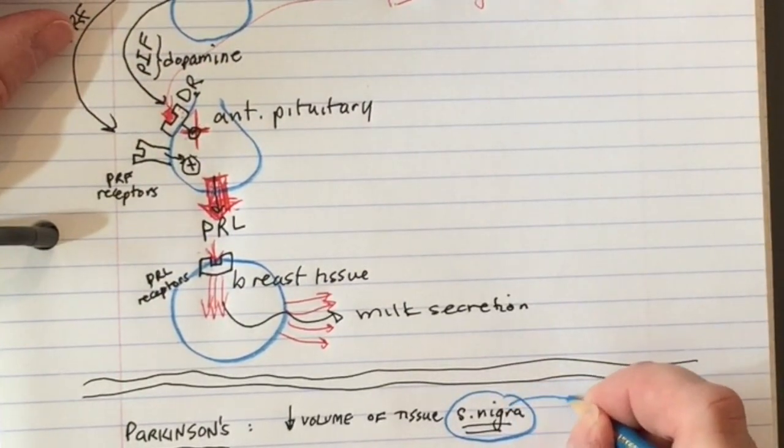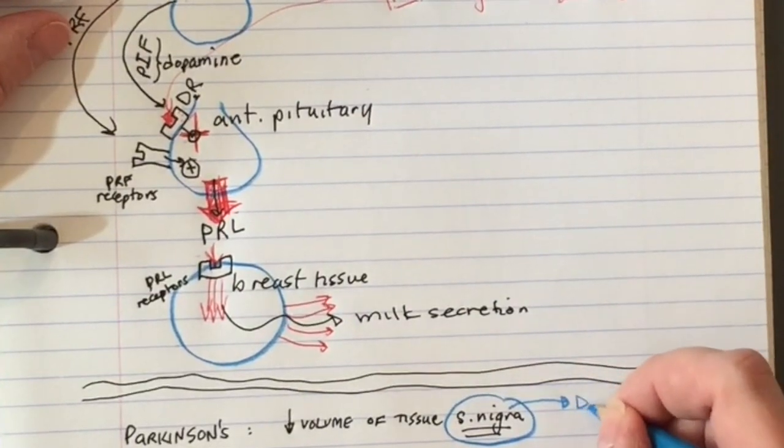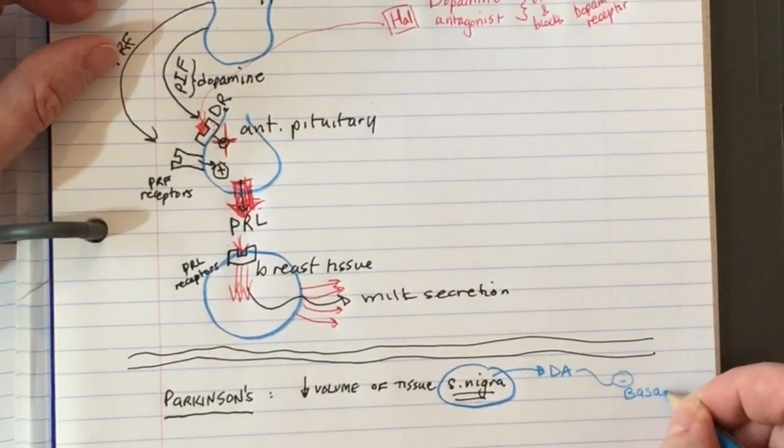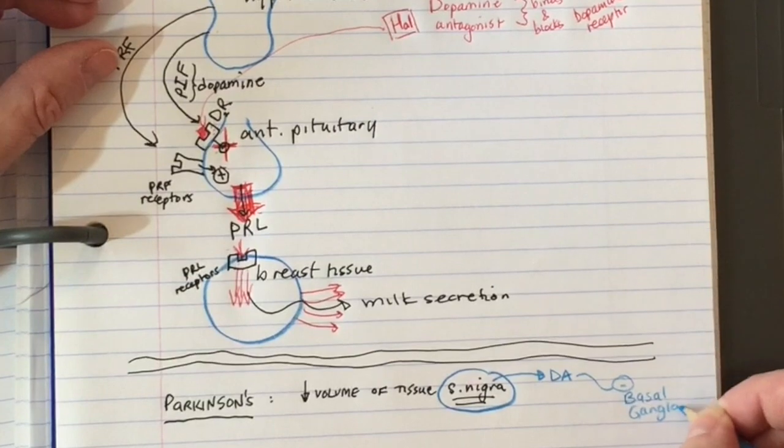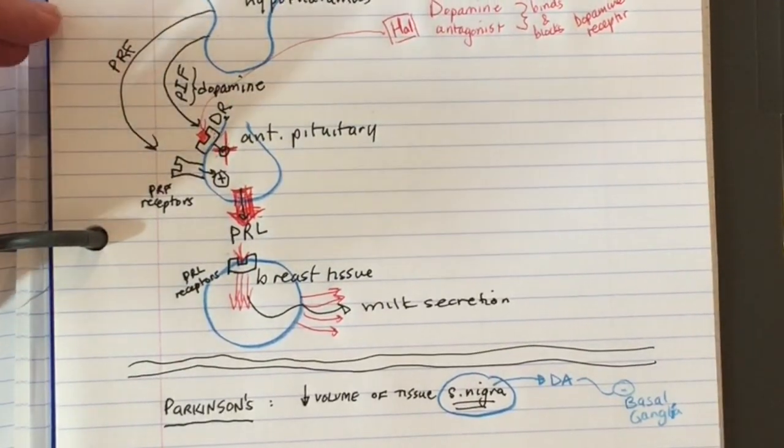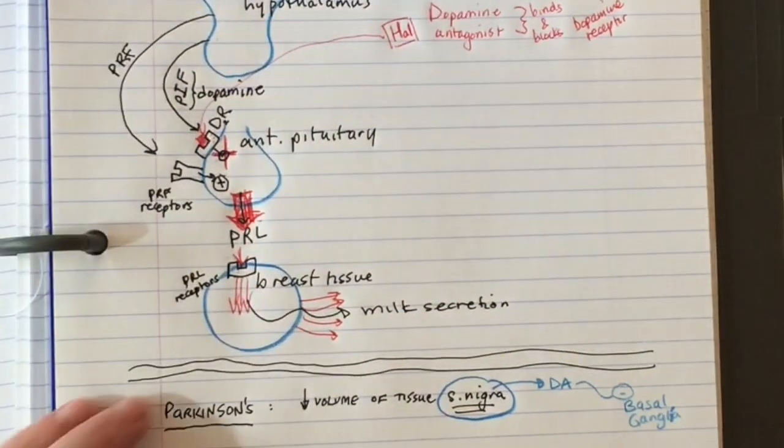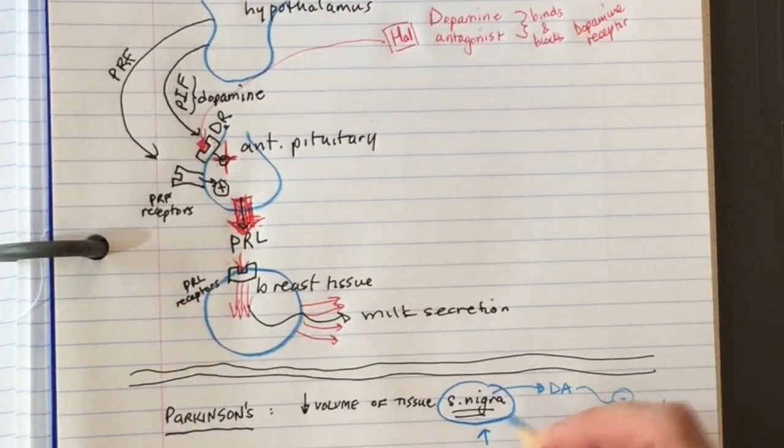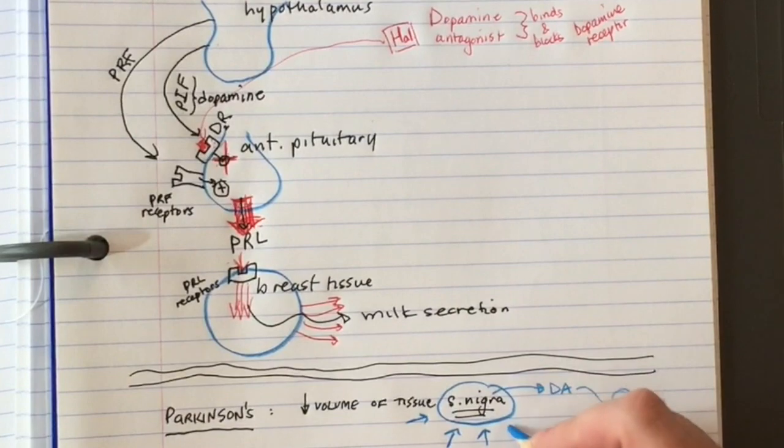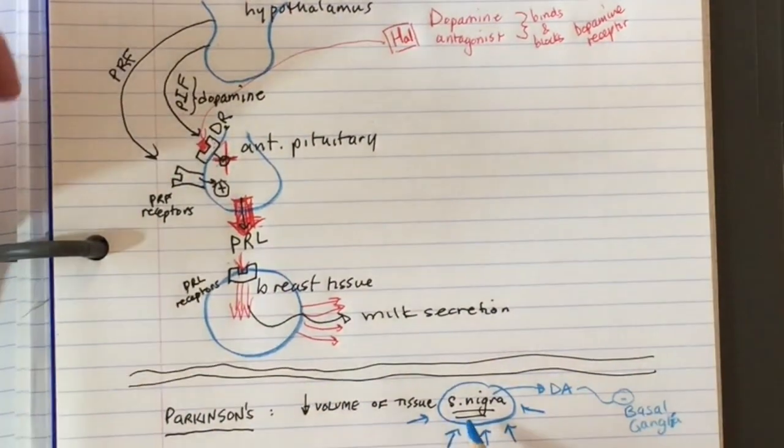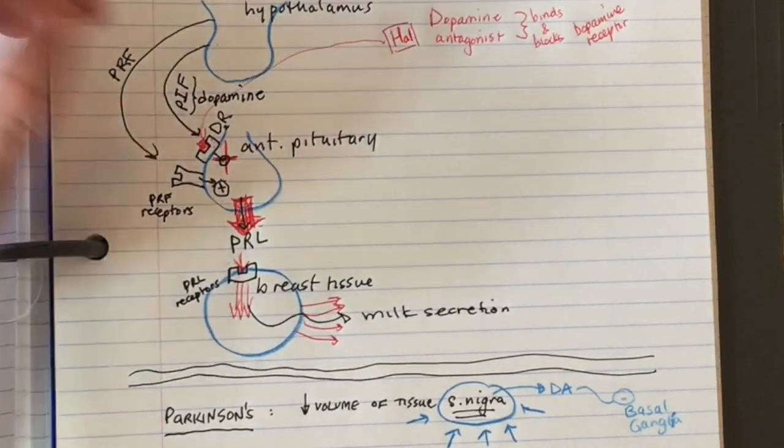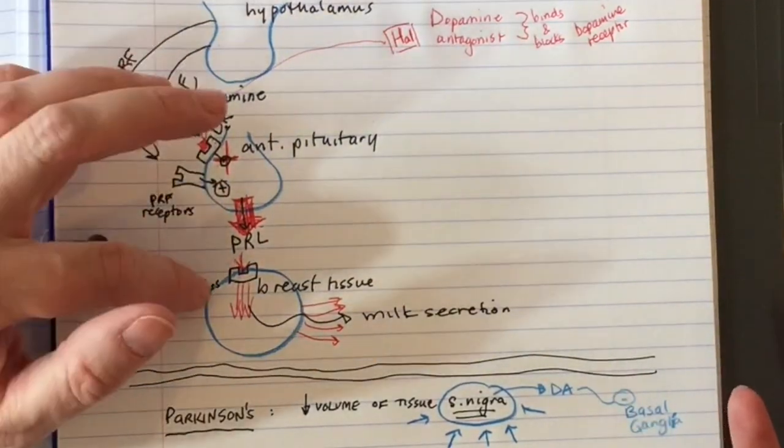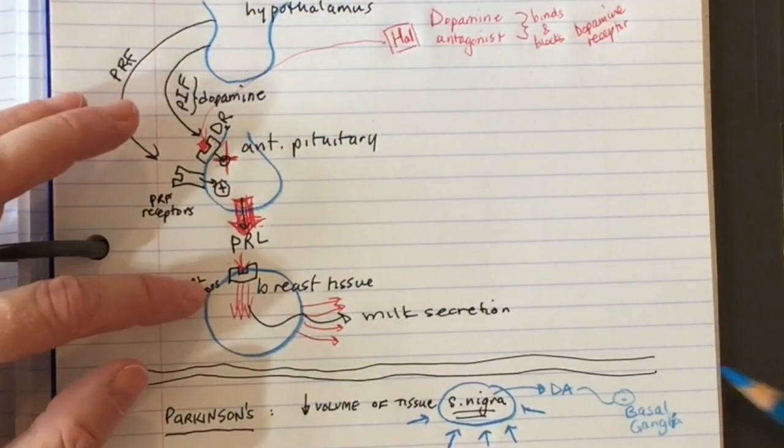That portion of the brain normally makes dopamine which inhibits the basal ganglia. The reason these patients don't have galactorrhea is that the only problem in Parkinson's before any drugs is the substantia nigra. In a Parkinson's patient, the hypothalamus is fine, the anterior pituitary is fine, the breast tissue is fine.